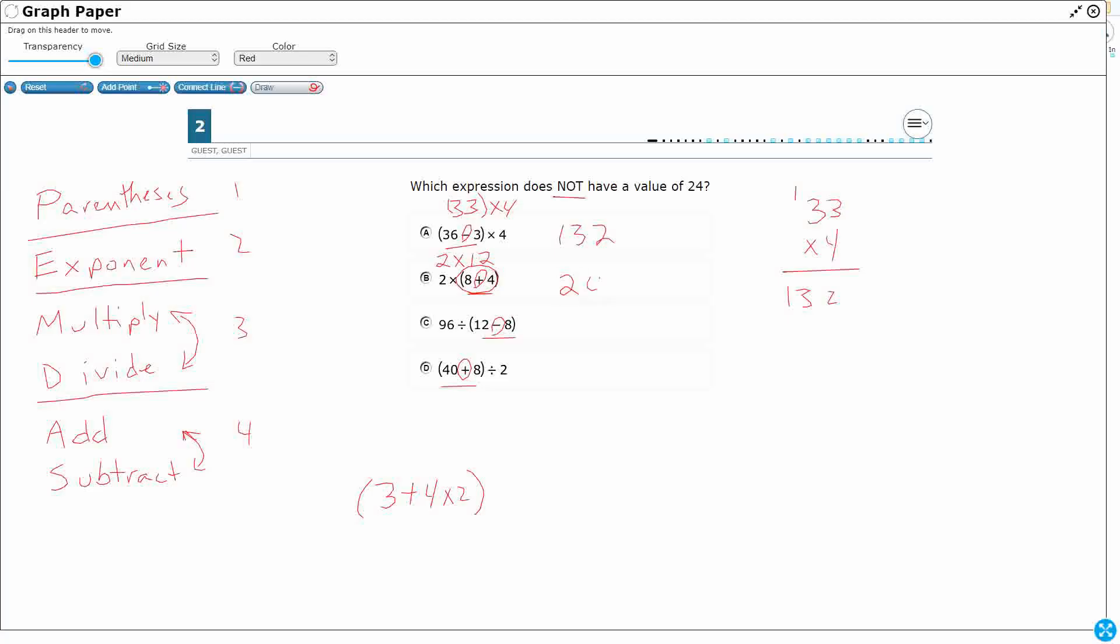So then I've got my two times 12. OK, so that's 24. So that does make 24, which means I don't want it. Remember, I'm looking for the one that does not have the value of 24.